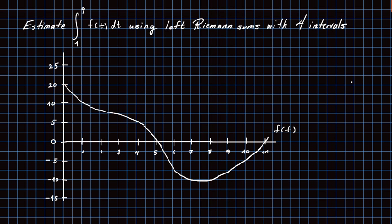When you're given the graph of a function and you're asked to compute the definite integral, you can hardly ever find an exact value, but you can estimate. You can use left sums or right sums, or an average of the two, to get an estimate. In this example, we want to use left and right sums to estimate the integral from 1 to 9 of f of t dt, given the graph of f of t.